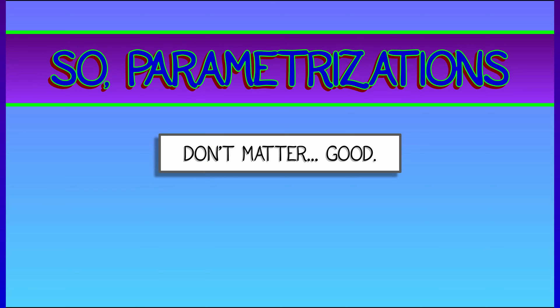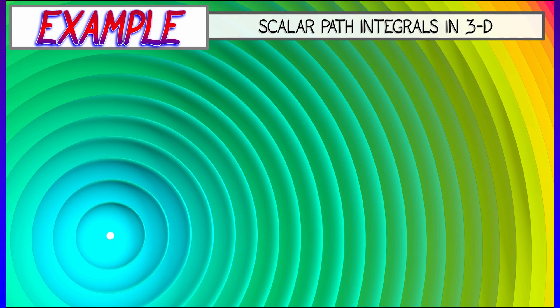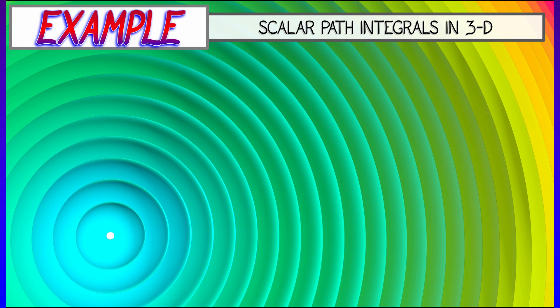So parametrizations don't matter, that's good. What does matter is the path itself. The shape of the path definitely matters. Be careful and think when you're computing scalar path integrals. Let's look at an example.